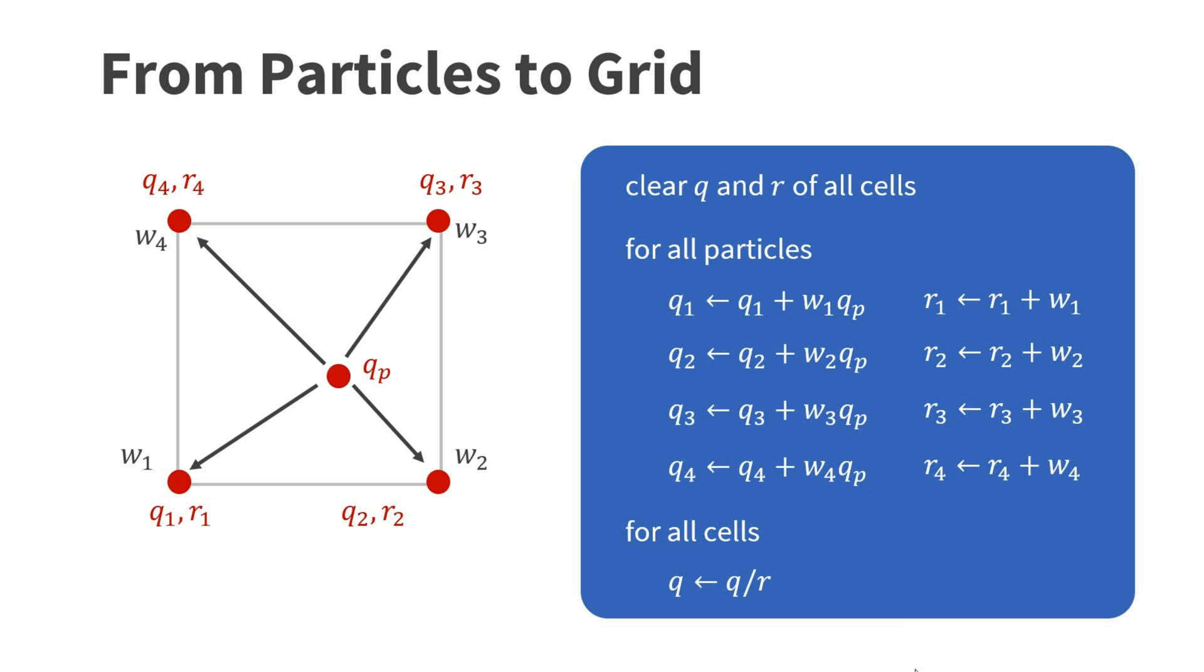To transfer the quantity from the particle back to the grid, we compute weighted sums on the grid corners. For this, we need a sum of weights R on each corner. First, we clear the Q and the R fields. Then, each particle adds its weighted quantity Q and the corresponding weight R. Finally, we divide all weighted sums by the sum of weights in each corner.